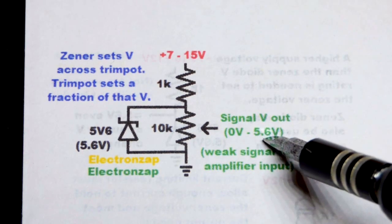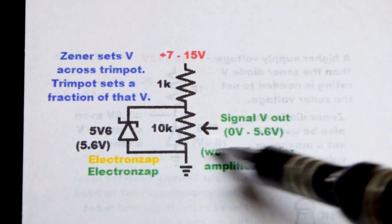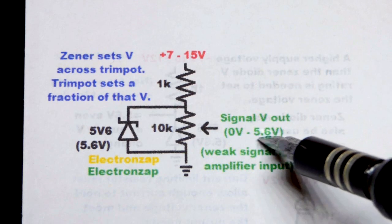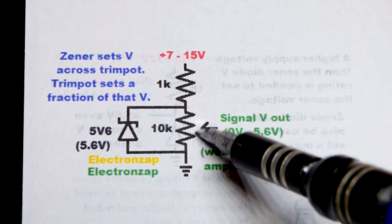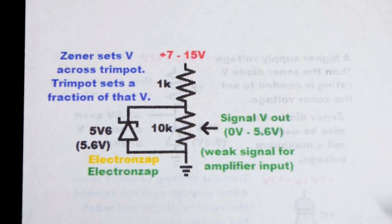It won't be exactly 5.6 volts, but it'll be close. Zener diodes are not 100% accurate, but they're pretty close, especially these 5.6 ones. And if you set it halfway, you'll have about 2.8 volts.